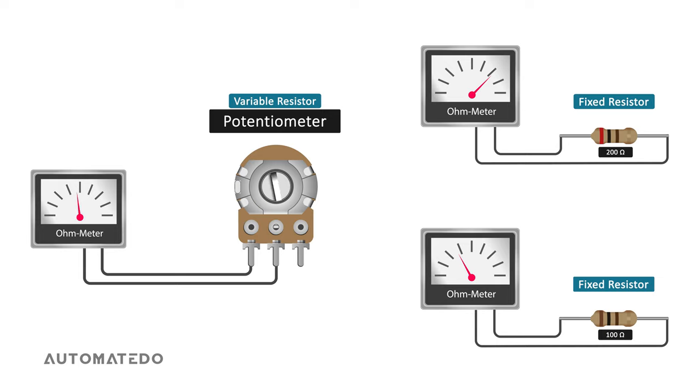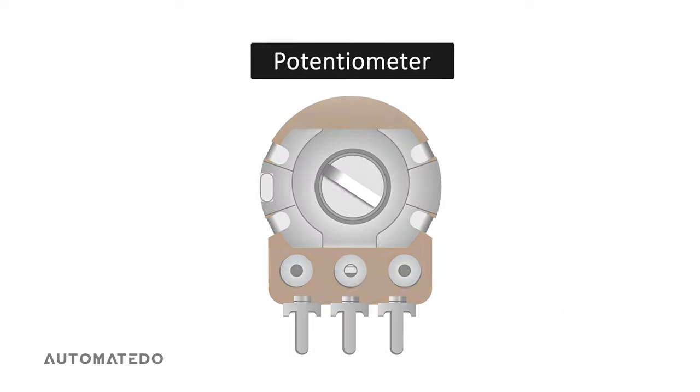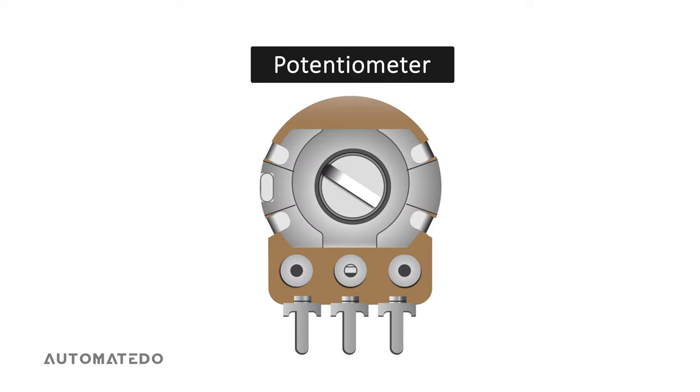Here you can easily change the resistance value just by turning the knob on top of the potentiometer. Let's have a look at the different parts of a potentiometer.